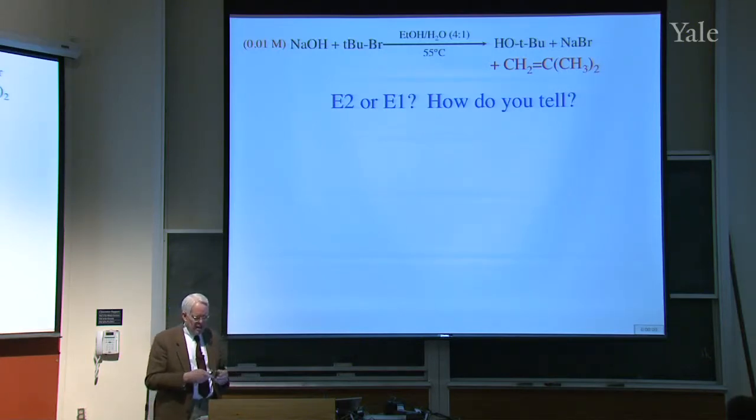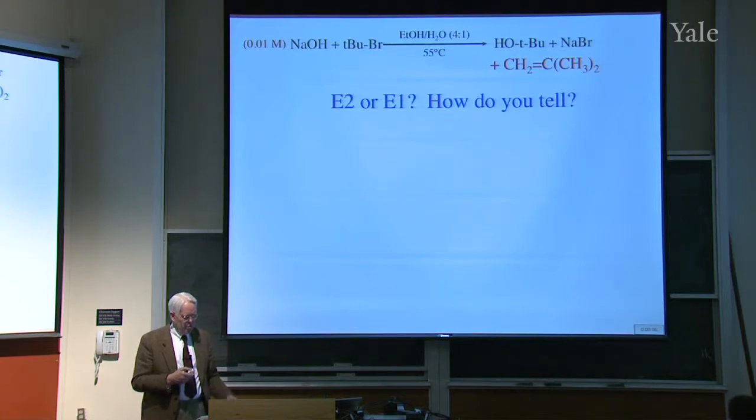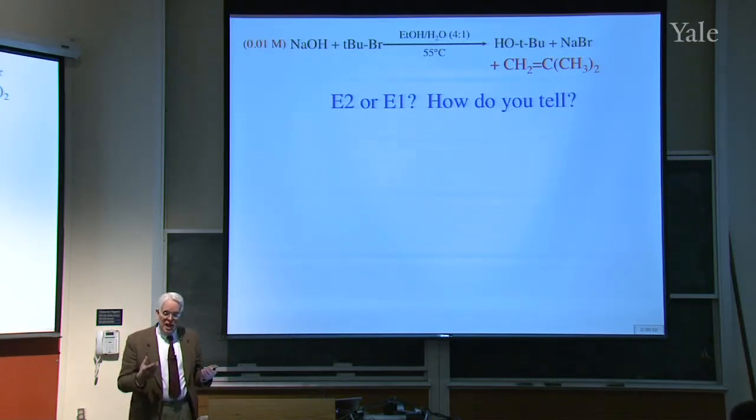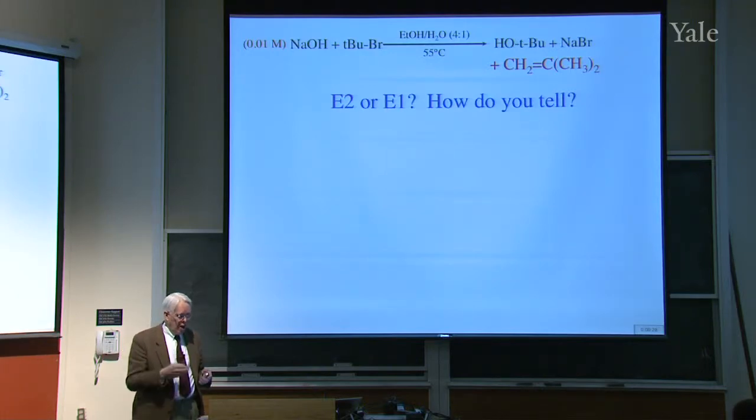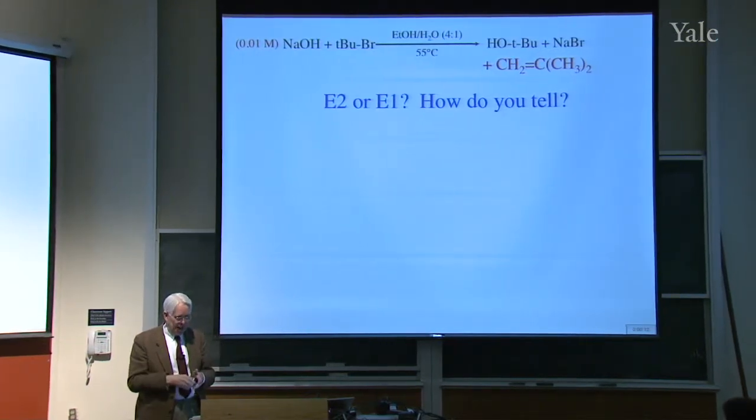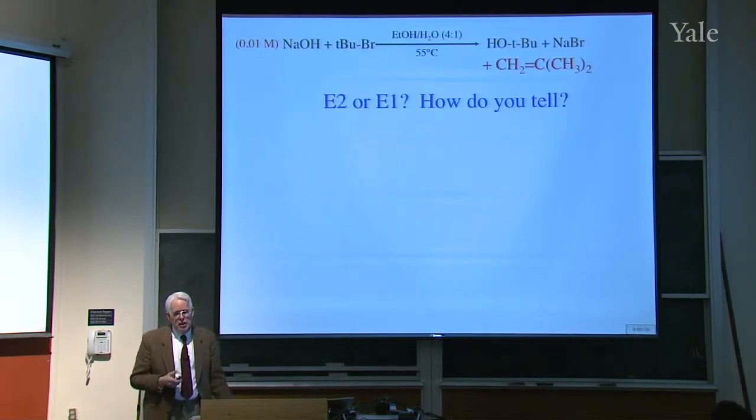The more the solvent can stabilize ions, the faster it can get the ions apart, the less of this effect you would have. Now we talked about this elimination reaction, that t-butyl bromide with sodium hydroxide gives a large amount of alkene. But is that process E1 or E2? Is the rate determining step formation of the t-butyl cation, and then hydroxide attacks it? Or is it attack of the hydroxide on hydrogen, pulling it off at the same time the chloride leaves?